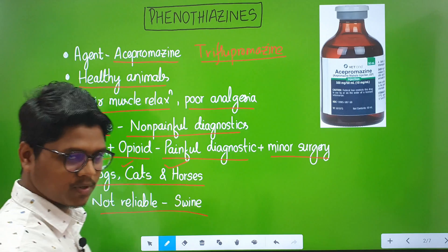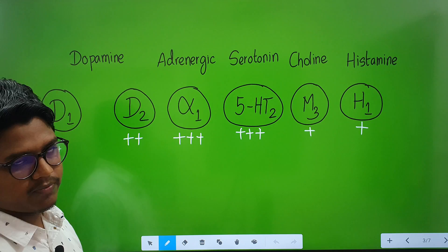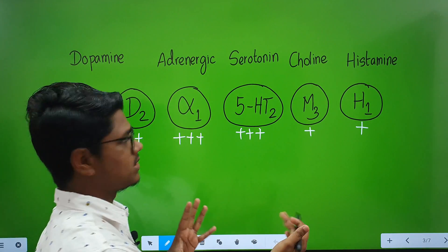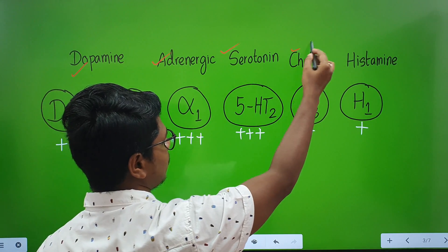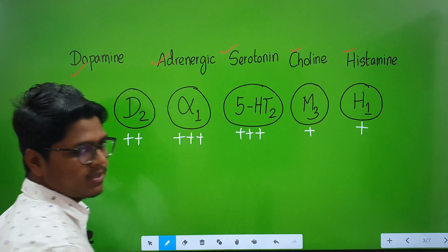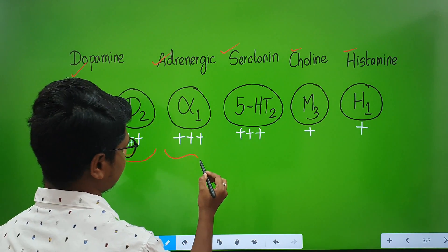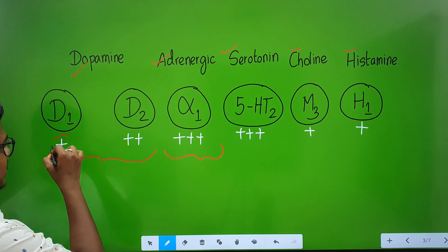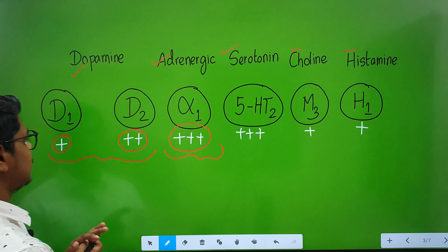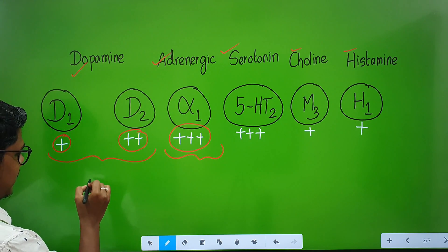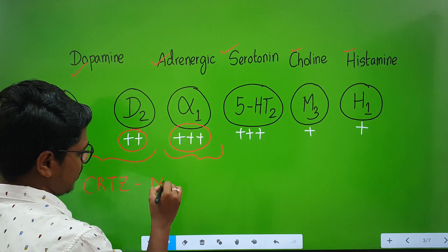Mechanism of action: phenothiazines bind to multiple receptors — dopamine receptors, adrenergic receptors, serotonin, acetylcholine, and histamine receptors. The most important are the dopamine receptors and the alpha-1 adrenergic receptors. The receptor binding strength is indicated as: single plus = weak, double plus = moderate, triple plus = strong.